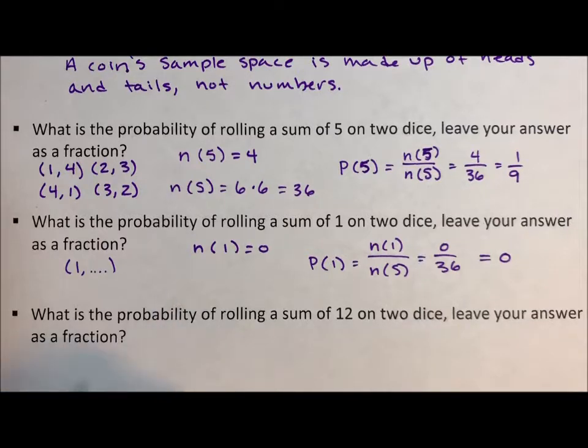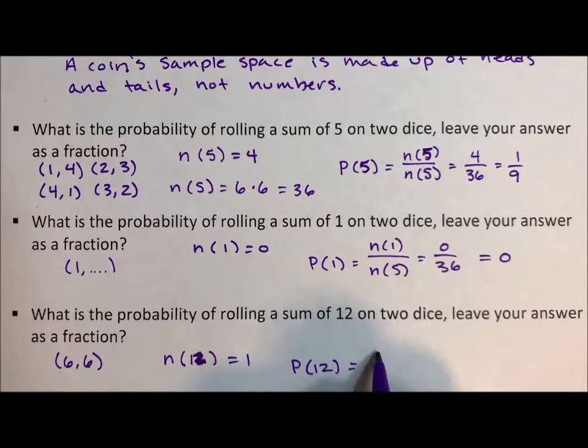What is the probability of rolling a sum of 12? Well, that's six and six, the largest of each die. So the number of elements that total 12 is one. So the probability of 12 is one over 36.